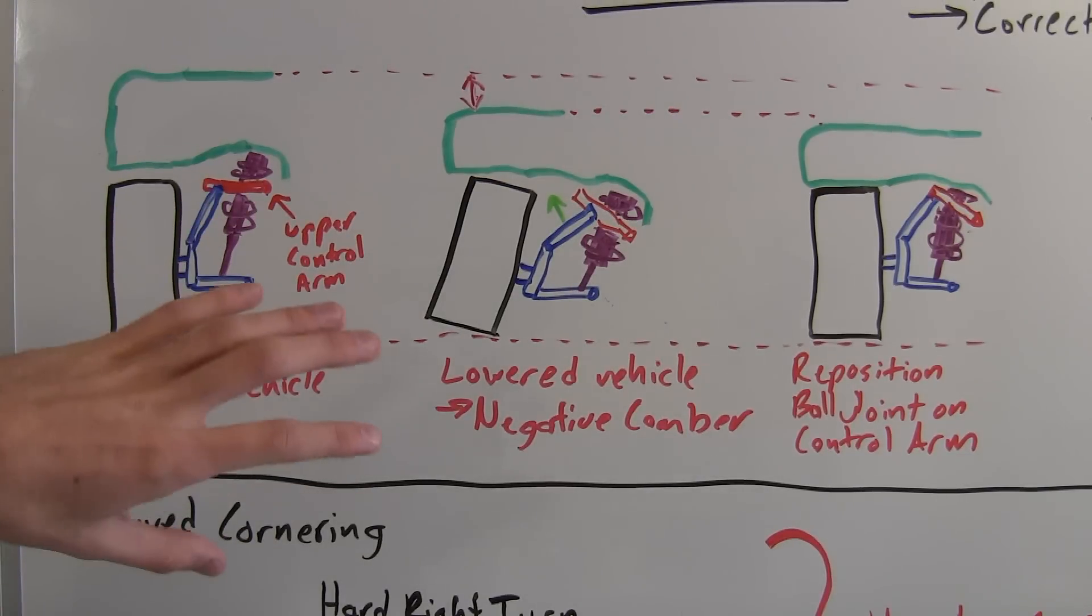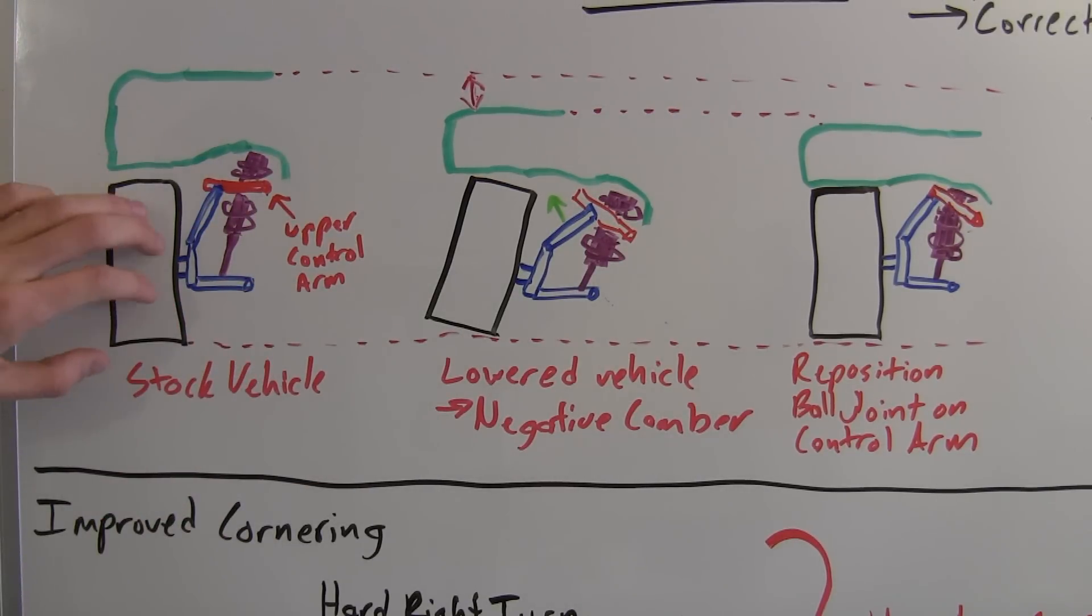So here we have a scenario where we're going to be lowering the vehicle. We've got our tire, the lower control arm, the upper control arm, the knuckle connecting it, the coil over, and the body of the vehicle in green.